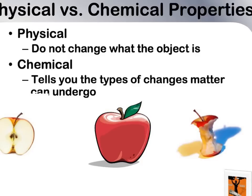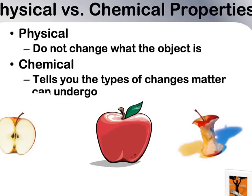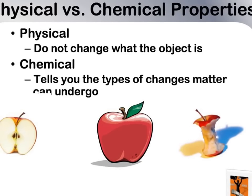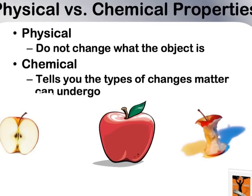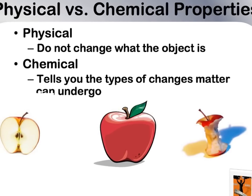When you look at an apple, you know that apples come in three colors: red, yellow, and green. They're round with smooth surfaces and have seeds in the middle. And when the apple is exposed to air, it will begin to turn brown. So of those descriptions, what are physical properties and what are chemical?